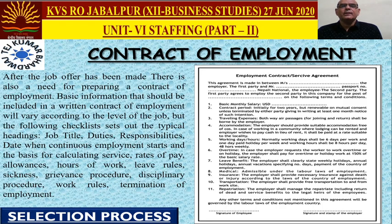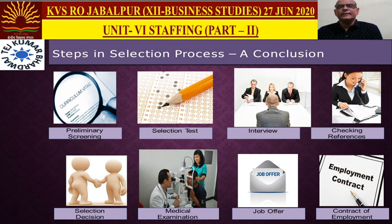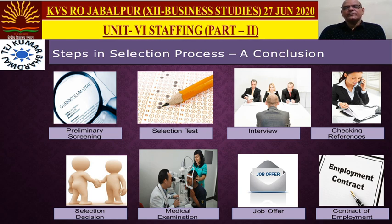Let us have a quick recall of the selection process. First, primary screening is done. After that, selection tests are conducted — five types: intelligence, aptitude, trade, personality, and interest test. Those who clear the tests appear for employment interview. After that, reference and background checks are done. A selection decision is made. Then medical examinations are conducted. A job offer is sent, and those who accept sign a contract of employment.